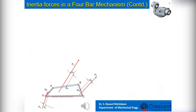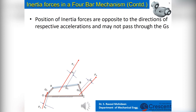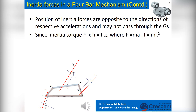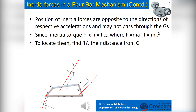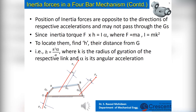The negative sign indicates that the inertia force acts in the opposite direction of the acceleration vector. After finding the magnitudes of inertia forces of the links in the mechanism, we need to find their positions on the links also. Direction of inertia forces are opposite to the directions of respective accelerations and may not pass through the G's. Since inertia torque F into H equals I into alpha, where F equals M into A and I equals M into K squared, to locate the inertia forces, find H, their distance from G, given by H equals K squared times alpha divided by acceleration, where K is the radius of gyration of the respective link and alpha is its angular acceleration.